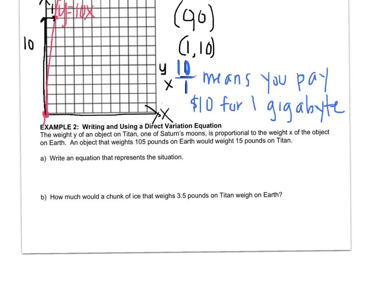Let's check out example two. The weight y of an object on Titan, one of Saturn's moons, is proportional to the weight x of the object on Earth. So the weight on Titan is y and the weight on Earth is x. An object that weighs 105 pounds on Earth would weigh 15 pounds on Titan.